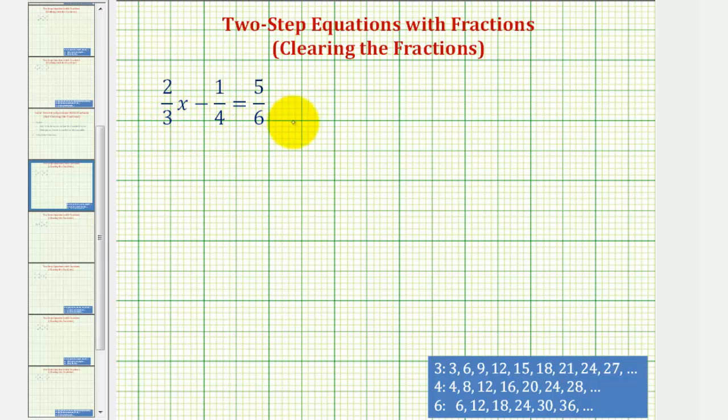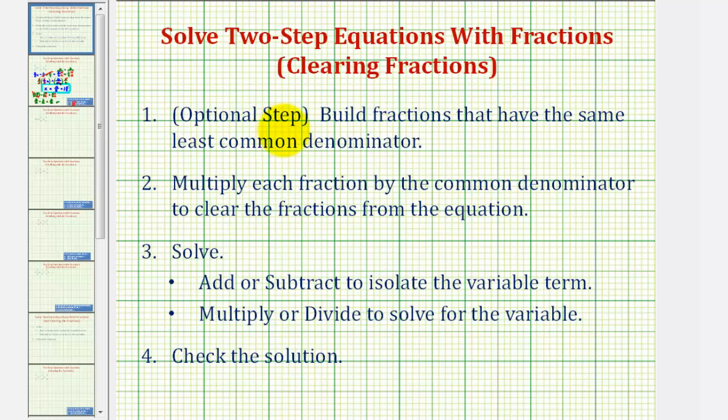But because we want to clear the fractions from the equation, let's review the steps that we'll take. The first step is actually optional, but we're going to build fractions that have the same least common denominator. And then step two, we'll multiply each fraction by the common denominator to clear the fractions from the equation.